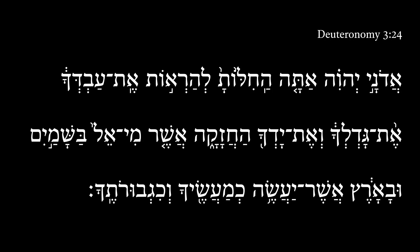Deuteronomy 3:24. So, we're back to the translation today. You might have noticed I said here, Adonai Elohim. This is typically the way it would be pronounced, though I recognize this is the divine name. Usually in English translations, this will be capitalized with all caps to recognize the divine name. But we get here: O Lord God.